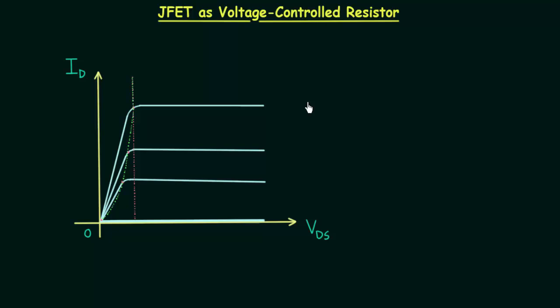We obtained output characteristics of a junction field effect transistor in the last presentation and now I will explain how we can use a JFET as a voltage controlled resistor.